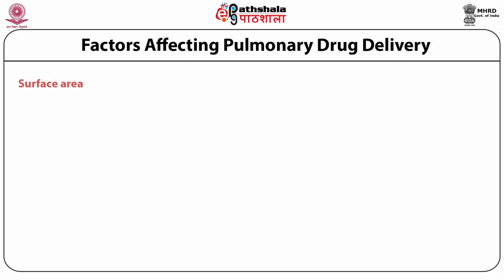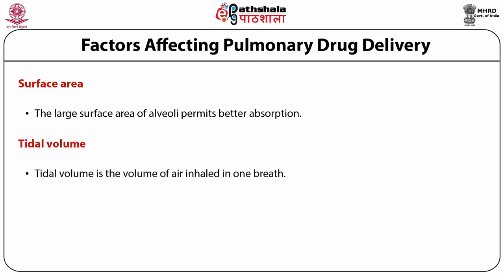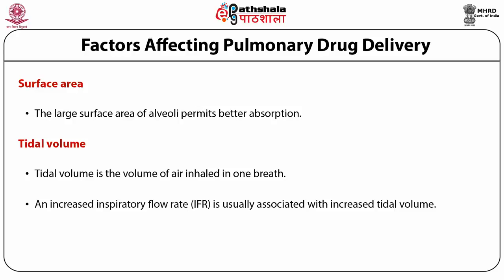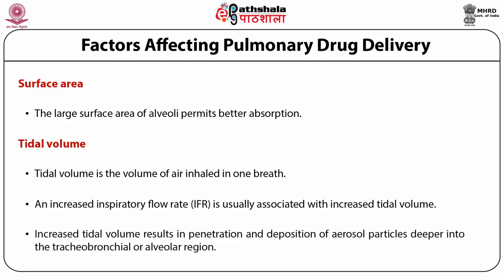The surface area of the lungs is another physiological factor. The large surface area of the alveoli allows better drug absorption in the alveolar region compared to other regions, because surface area is very large and membrane thickness is very low. The presence of mucin also affects absorption in the alveolar region. Tidal volume — the volume of air inhaled in one breath — is also important. An increased inspiratory flow rate is associated with increased tidal volume, resulting in deeper penetration and deposition of aerosol particles into the tracheobronchial or alveolar region.